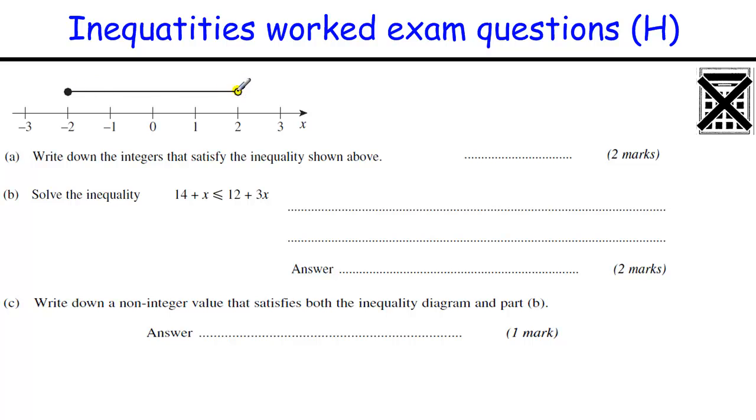Inequalities represented on a number line, like I showed you earlier, the colored-in dot includes that value, the hollow dot doesn't include that value. So write down the integers that satisfy the inequality shown above, so minus 2 is okay, minus 1, 0, and 1, 2 is not included.